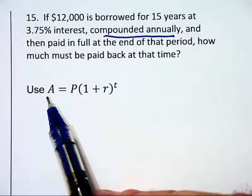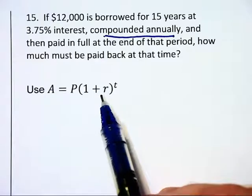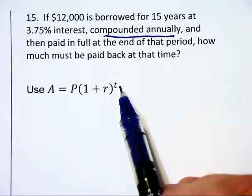A will be the amount of money you are going to be generating. P will be the principal. R will be the interest rate expressed in decimal form, and T will be the time.